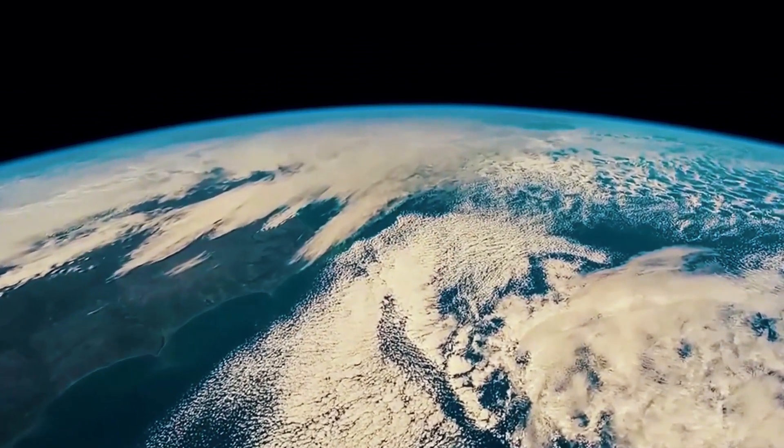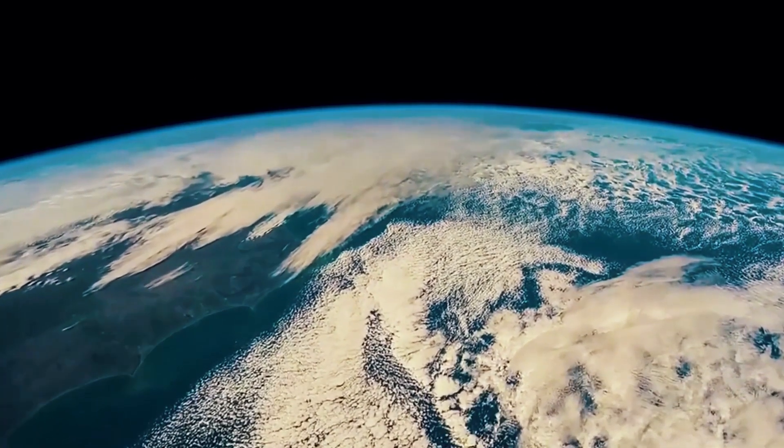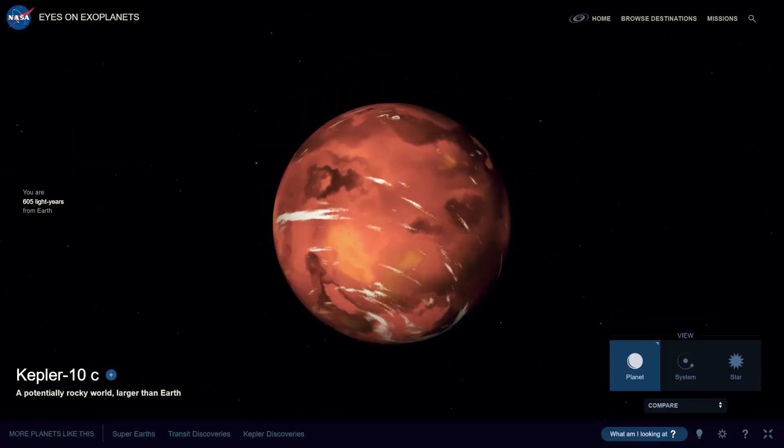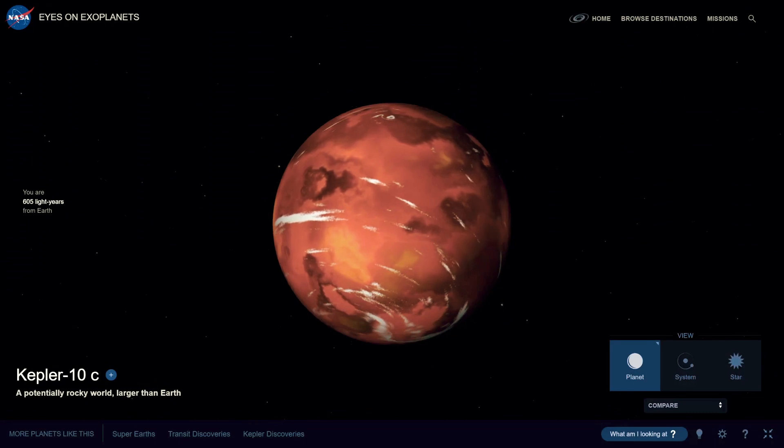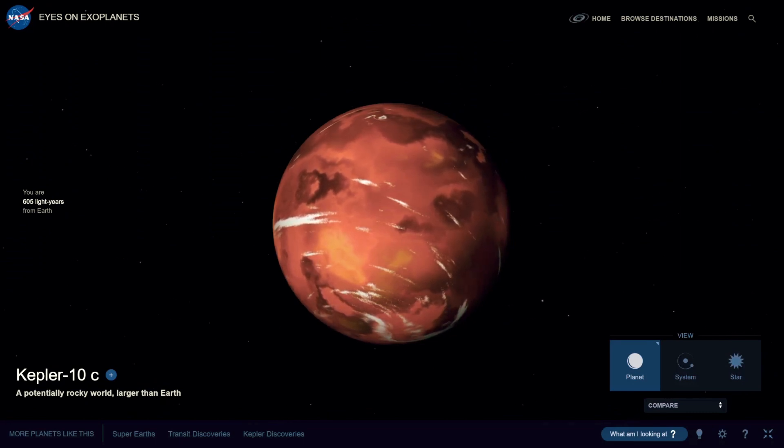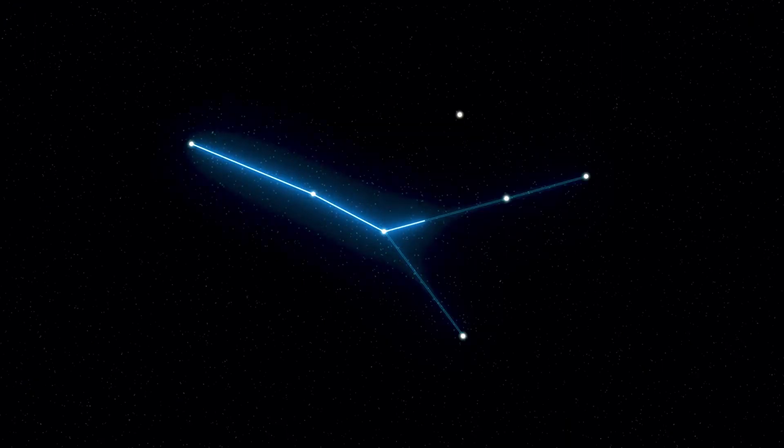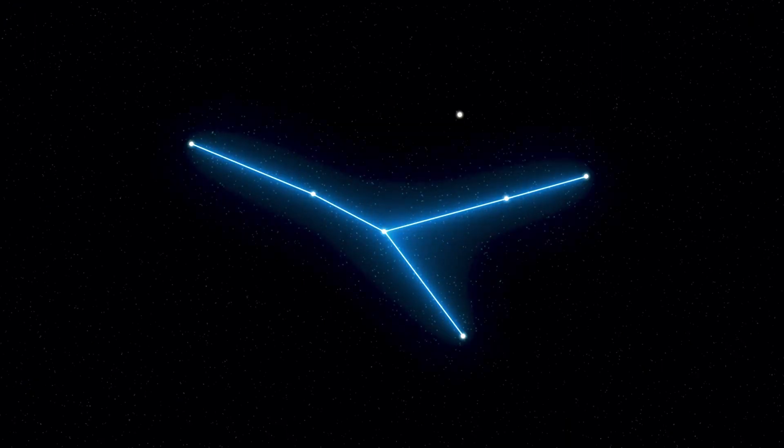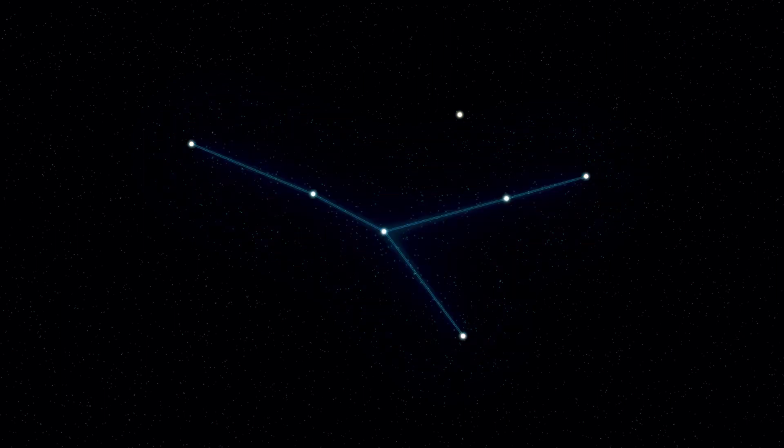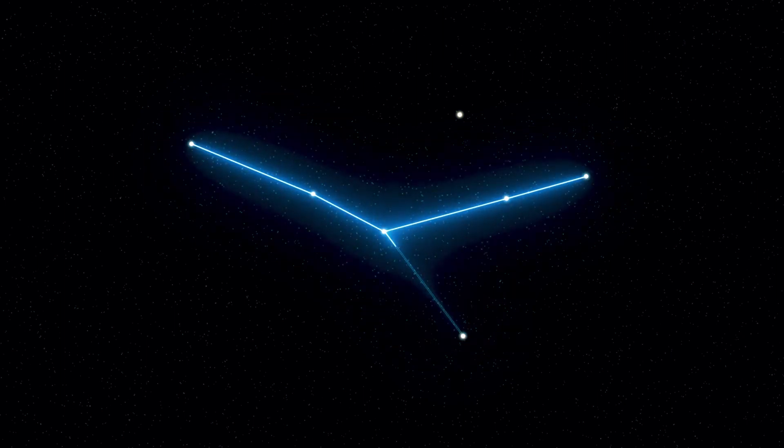A colossal rocky world that has astronomers scratching their heads in wonder and amusement. Kepler-10c, orbiting the G-type star Kepler-10, is a behemoth with a mass 17 times that of our home planet. It's located a staggering 608 light-years away in the constellation of Draco, a dragon in the sky guarding a treasure trove of cosmic secrets.